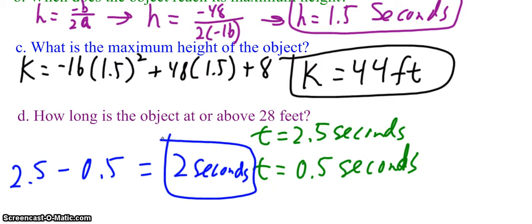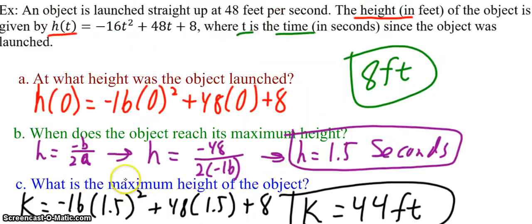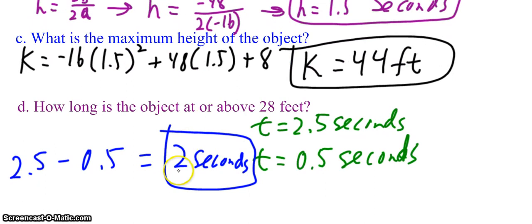That's it. Again, I want to point out, we could have done this without the calculator if we set this equal to 28 and then we solved for T. We could have factored or used the quadratic formula. Those are all valid methods, but I wanted to show the calculator.